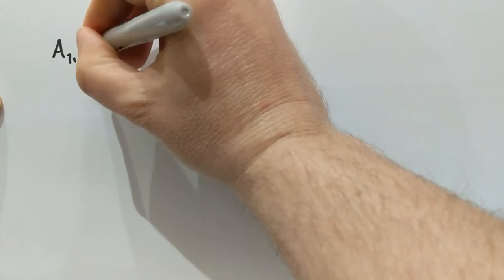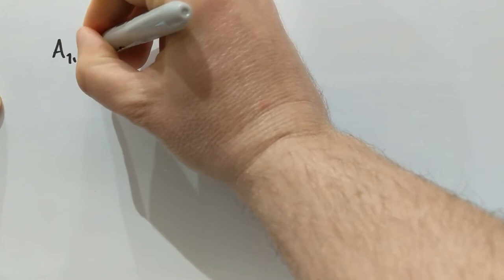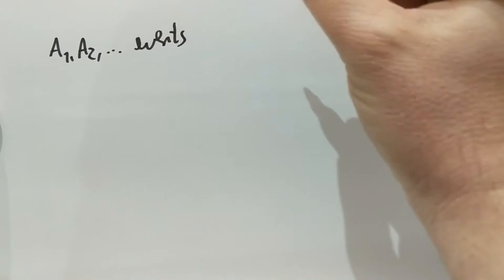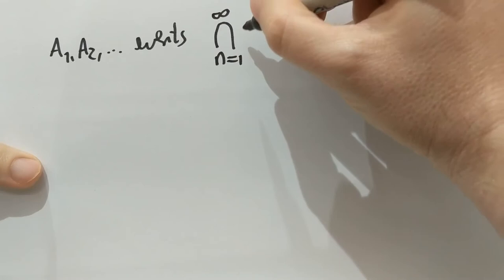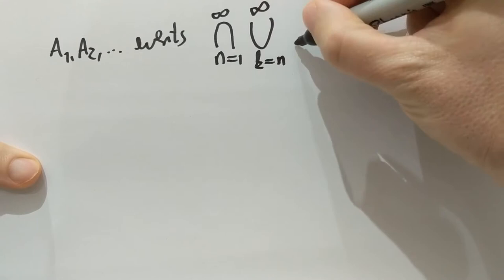A1, A2, and so on and so on. So these are events. And the combination I'd like to look at is the intersection, n goes from 1 to infinity, of the union, k goes from n to infinity, of the AKs. This is what I want to look at.